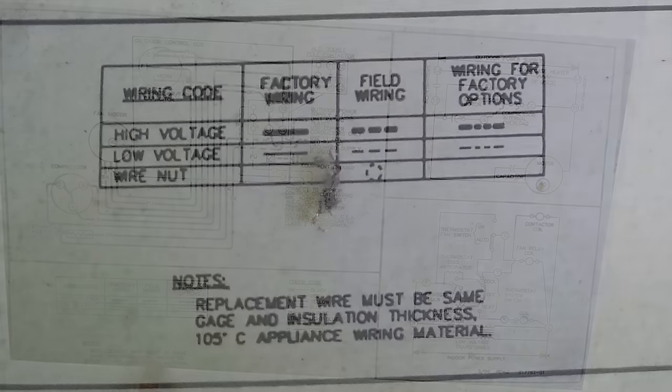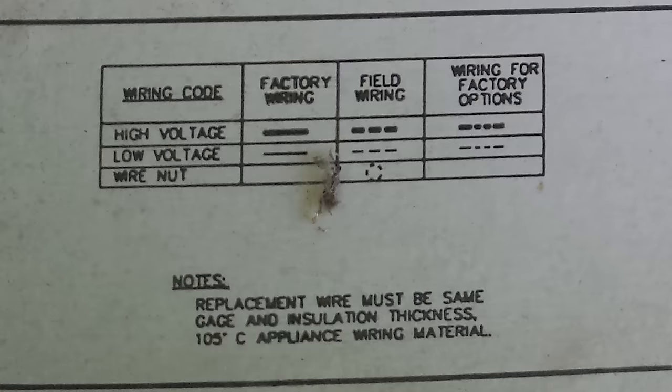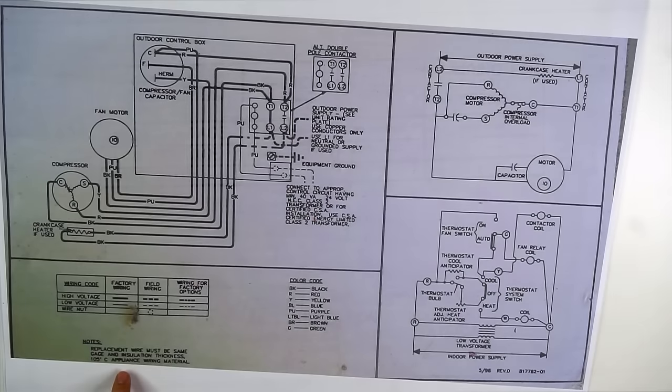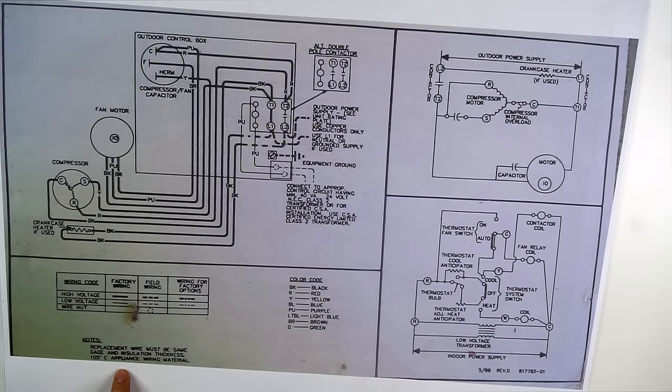One note says replacement wire must be the same gauge and insulation thickness. So if mice chew up a bunch of wires and you're replacing them, this note is telling you that the replacement wires should be the same gauge and same insulation thickness as the old wires.